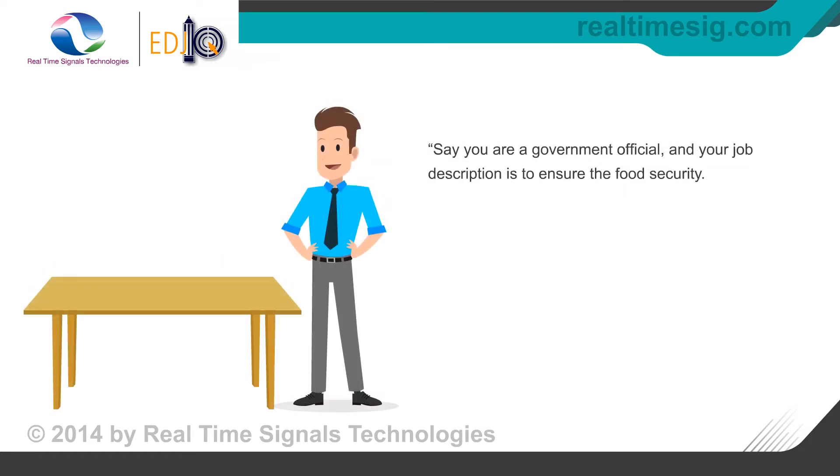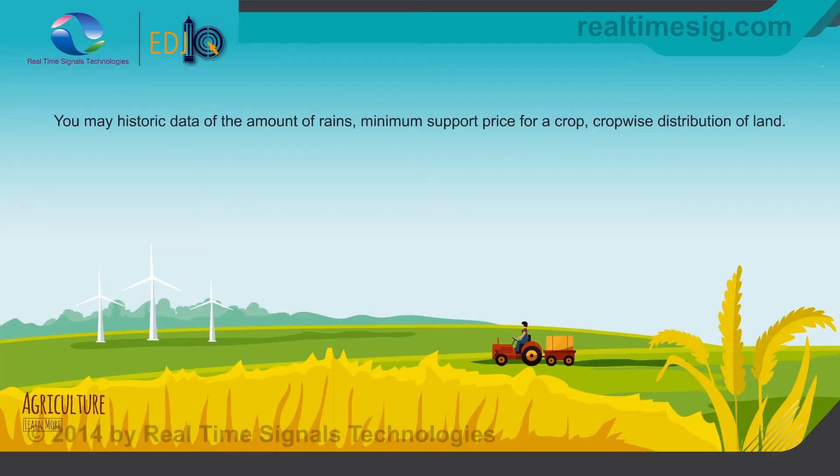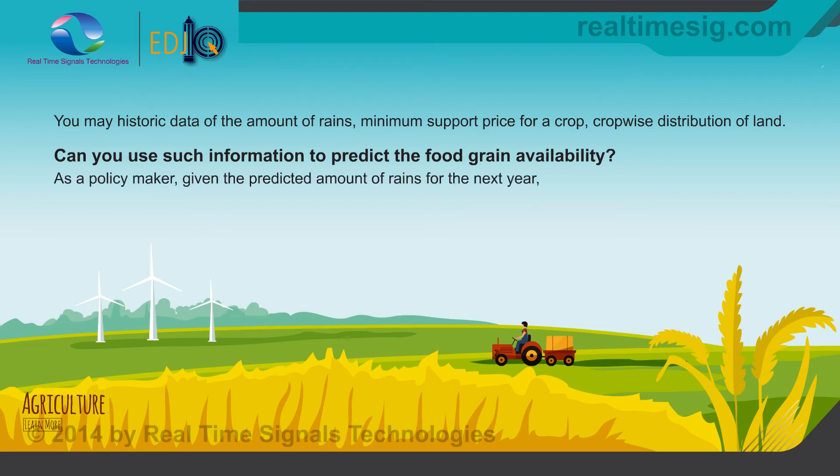Say you're a government official and your job description is to ensure food security. You may have historic data of the amount of rains, minimum support price for a crop and crop-wise distribution of land. Can you use such information to predict the food grain availability? As a policy maker, given the predicted amount of rains for the next year, can you encourage farmers to grow one crop over the other?